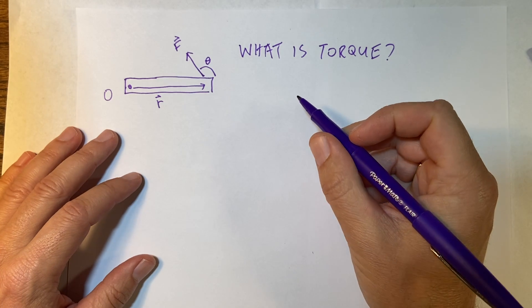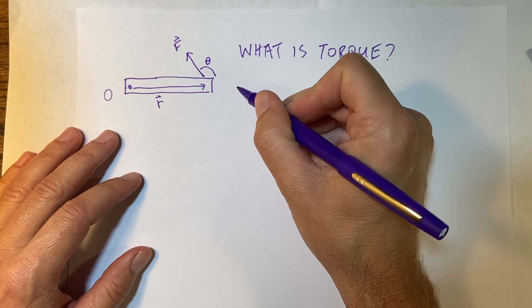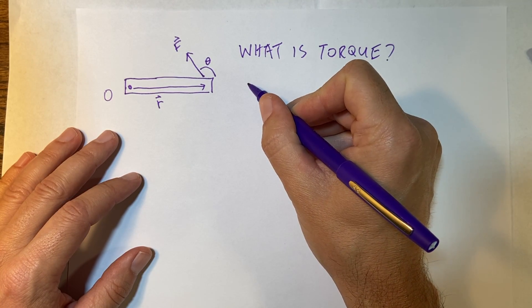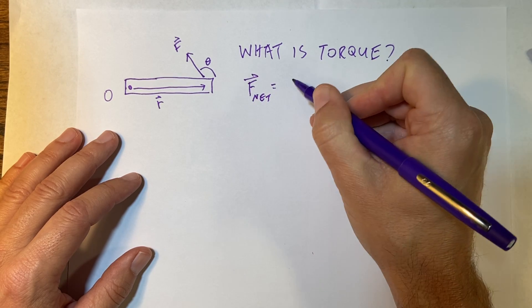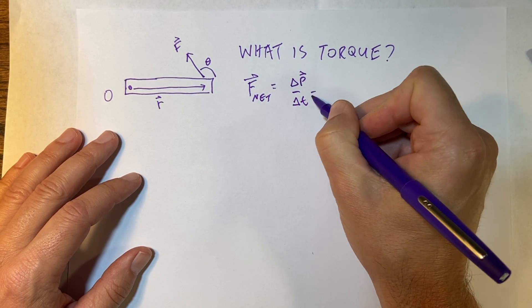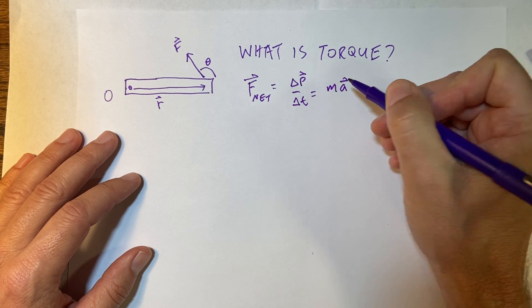So if you think about where we've gone so far, we've done a lot of stuff. And in particular, we have the momentum principle, which I could write as this: F net equals the change in momentum over the change in time, which you could also write as mass times acceleration.